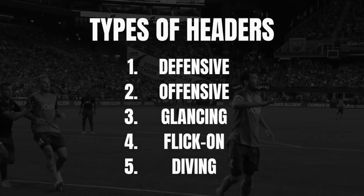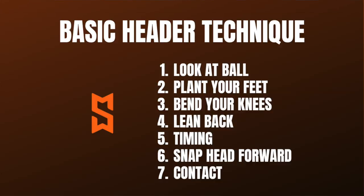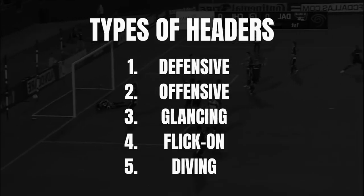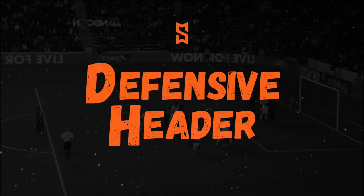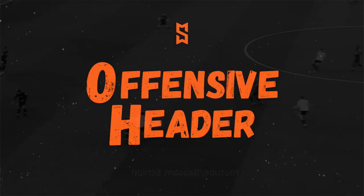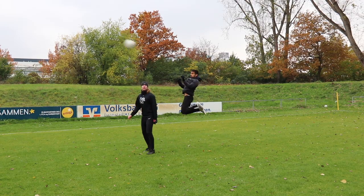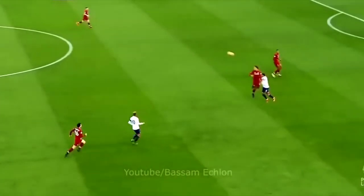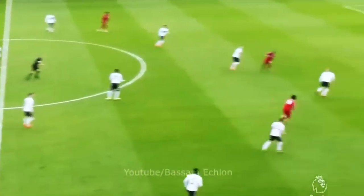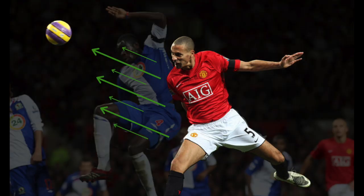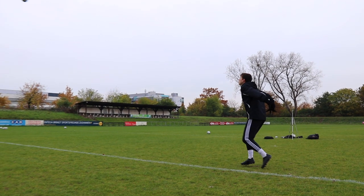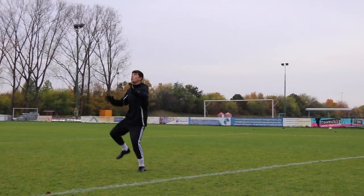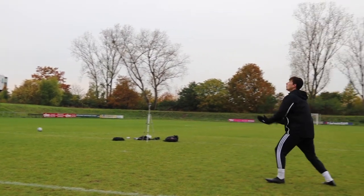Moving on to the five different types of headers. The offensive technique is very different from the defensive header. When defending, the purpose is to clear the ball up and away from the danger zone — heading the ball high gives teammates time to reorganize defensively, and hitting it far denies immediate threat on goal. When performing offensive headers, focus on hitting the ball downward toward the goal line, keeper's feet, and bottom corners, making it harder for the keeper to react and make a quality save.